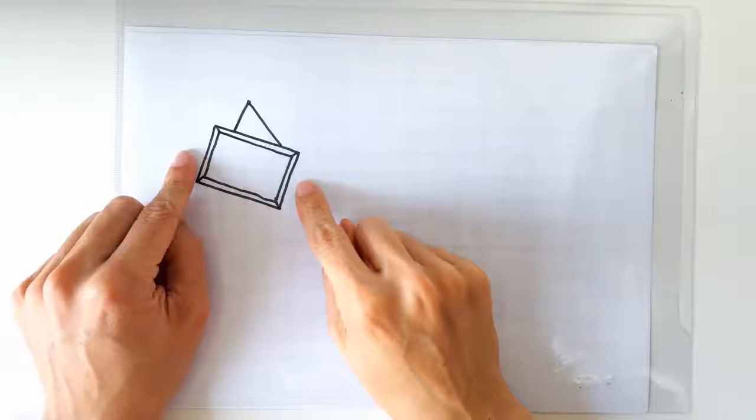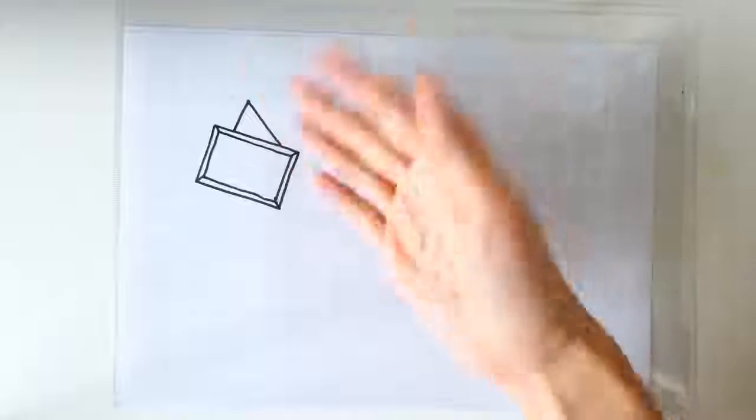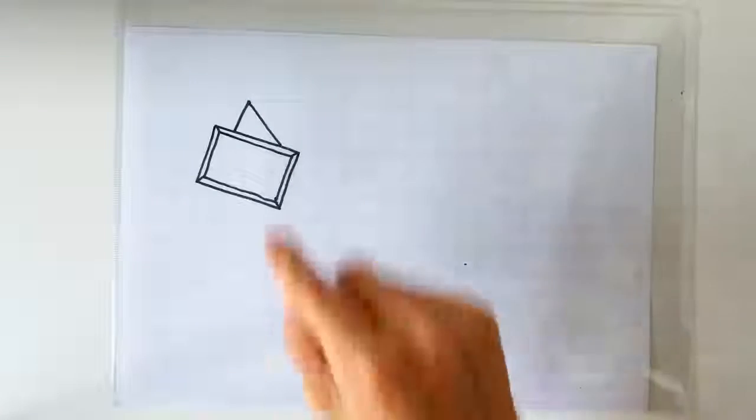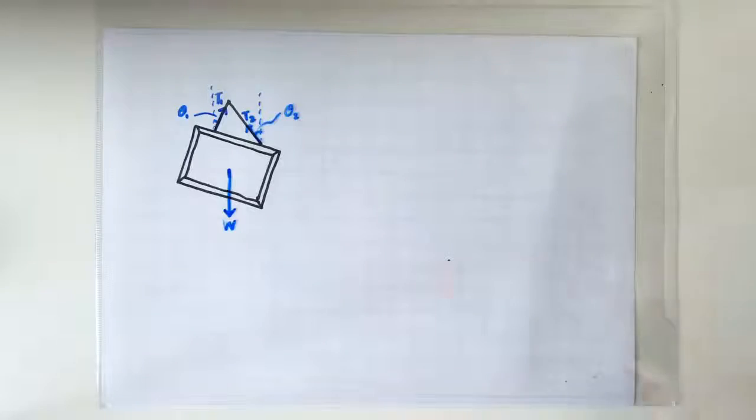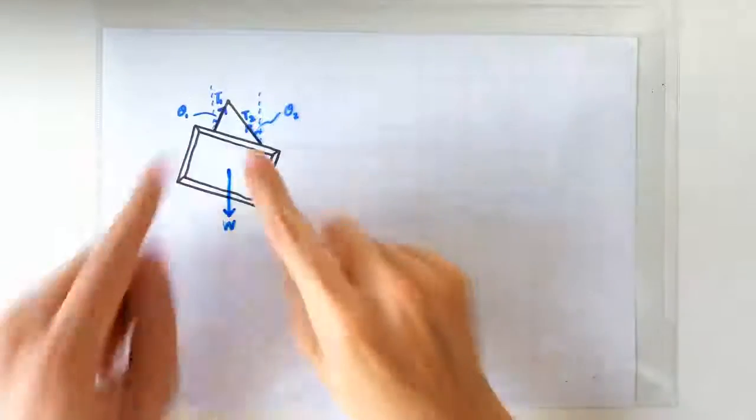Hello, this is a picture frame hung on the wall in a very sloppy manner. How do we calculate the tensions in the string? There are three forces acting on this picture frame.